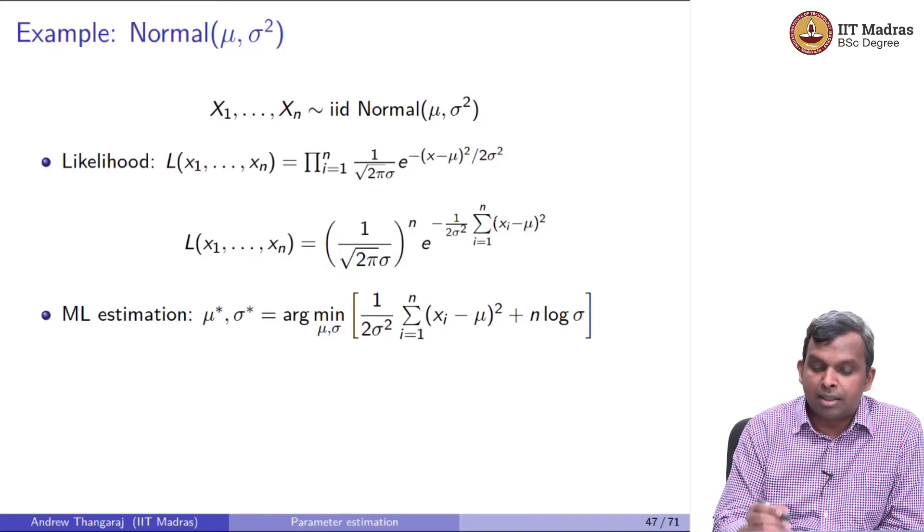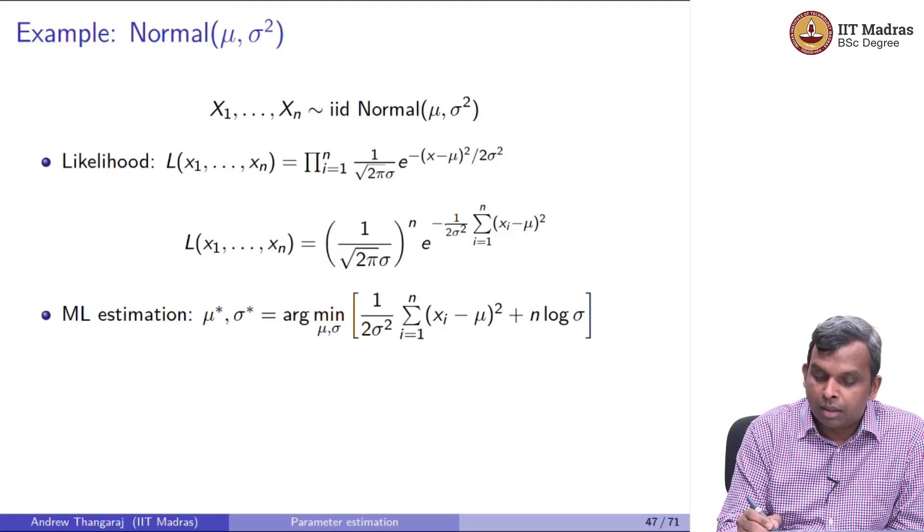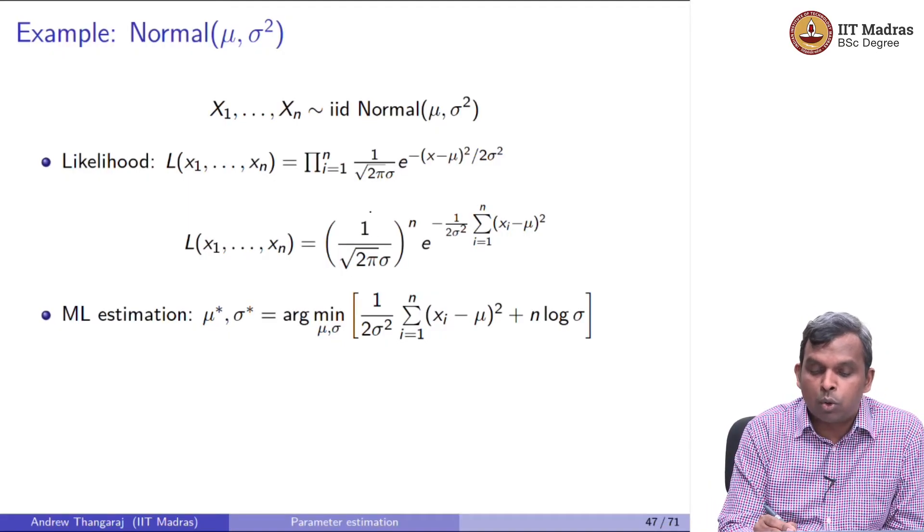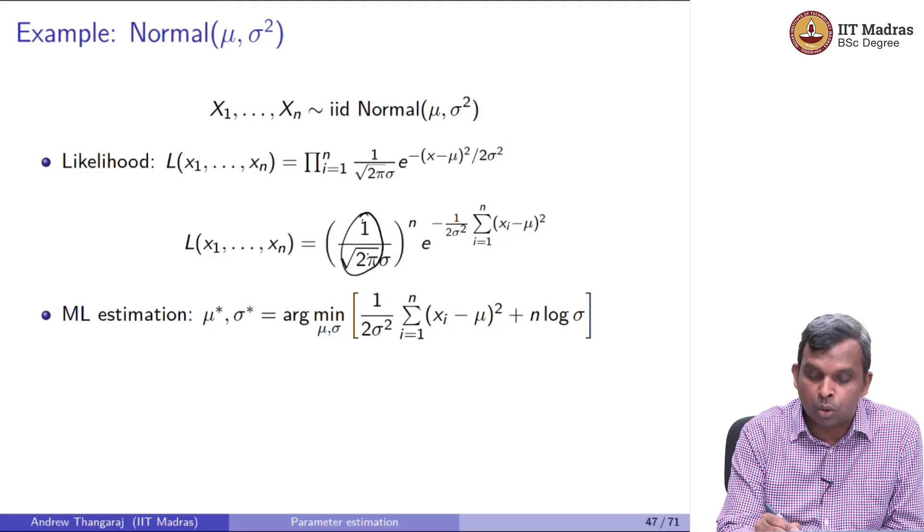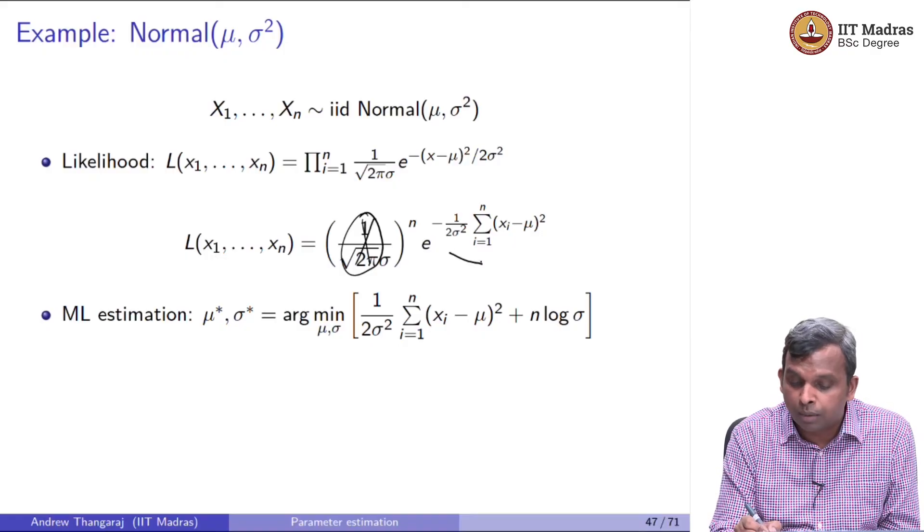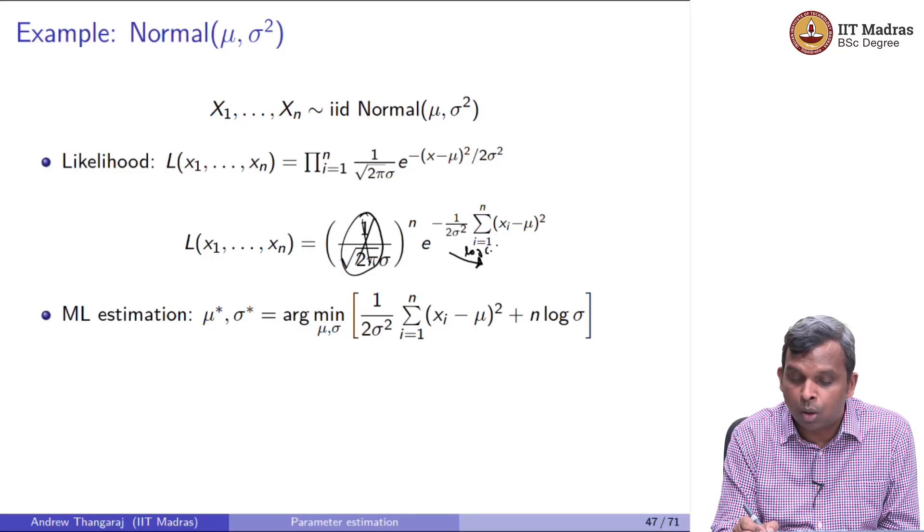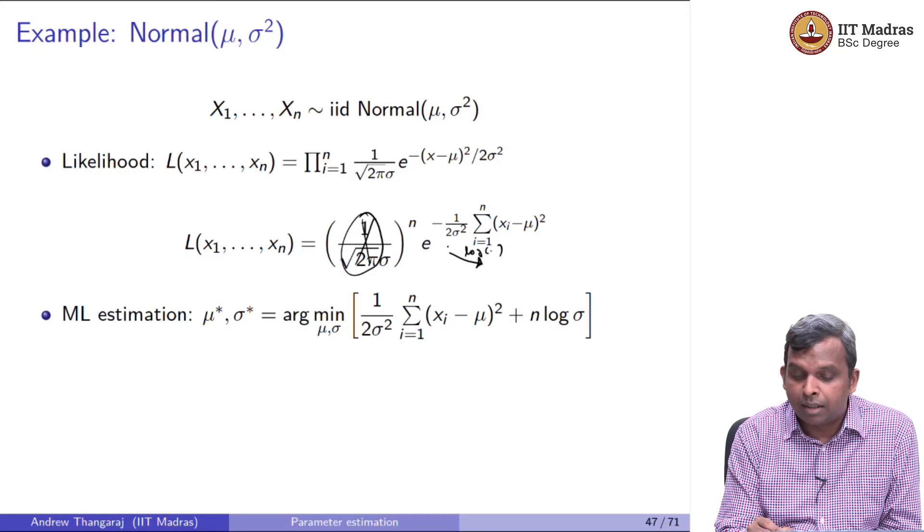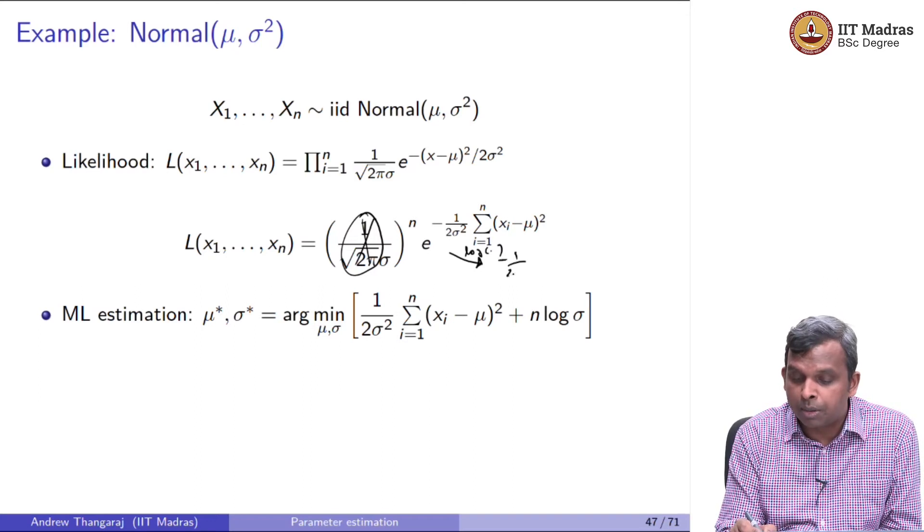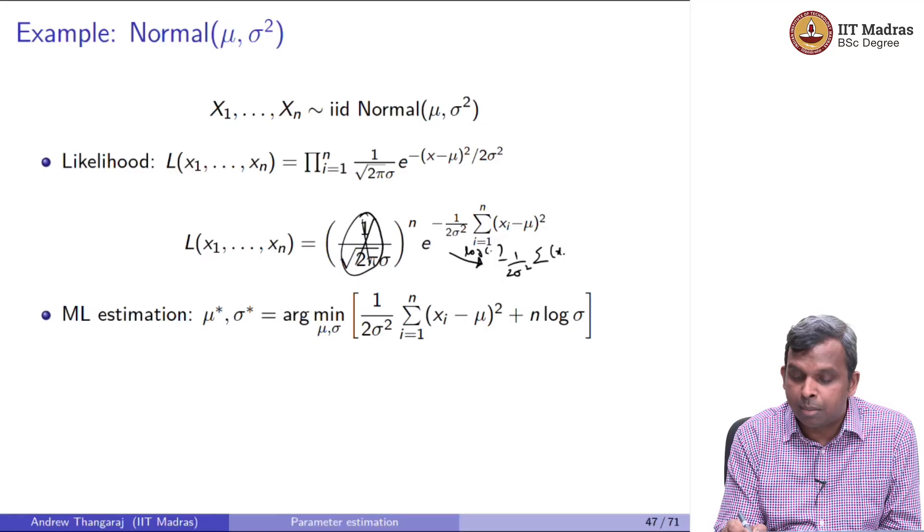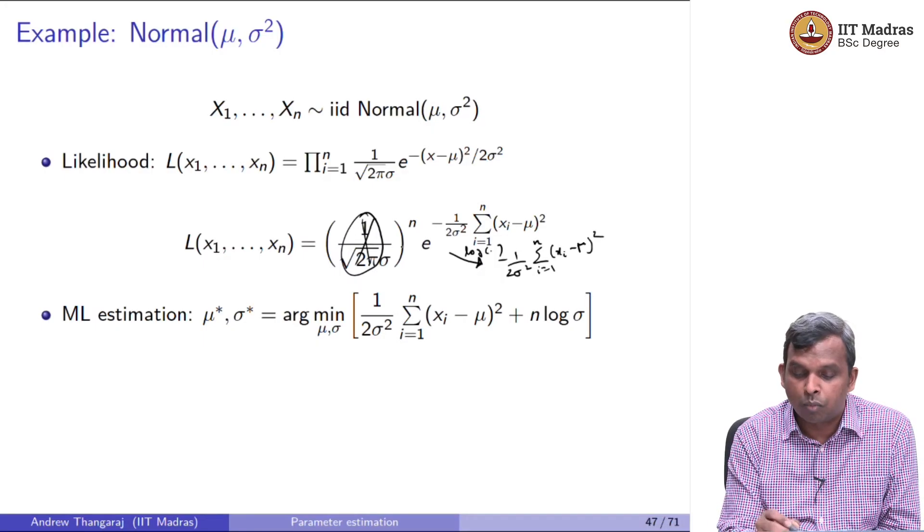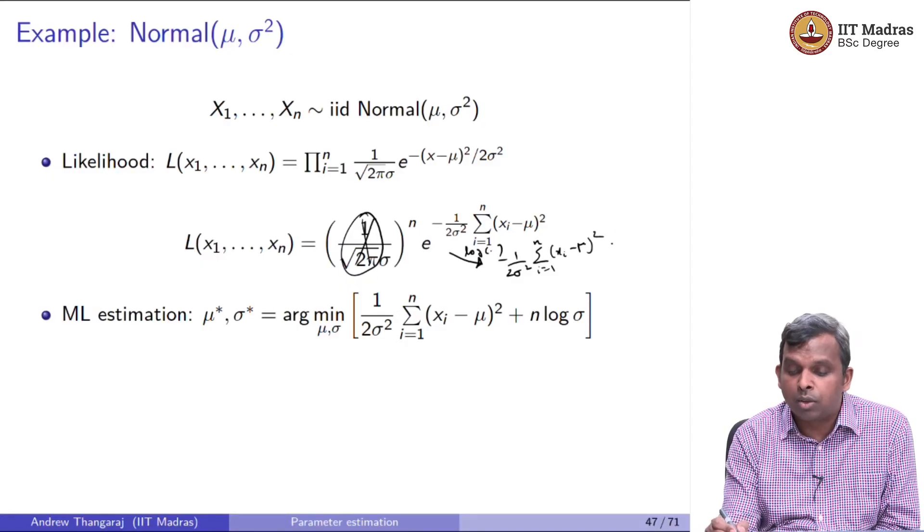Here what happens is the relevant part of the function, see 1 by √(2π) can be ignored. So this part I will ignore. And then when I take log, notice what happens: log, I will get -1/(2σ²) summation (xi - μ)² i equals 1 to n. And then you have a 1 by σ^n, so that is -n log σ.